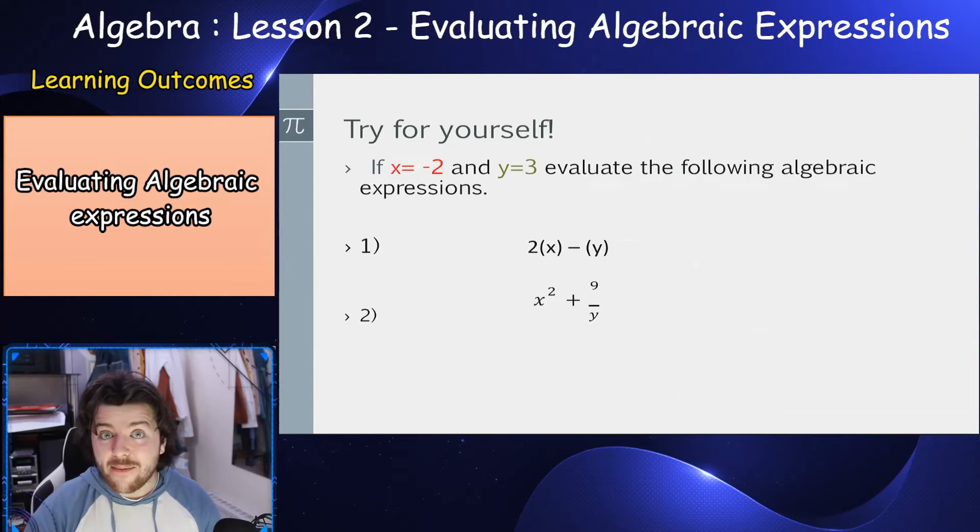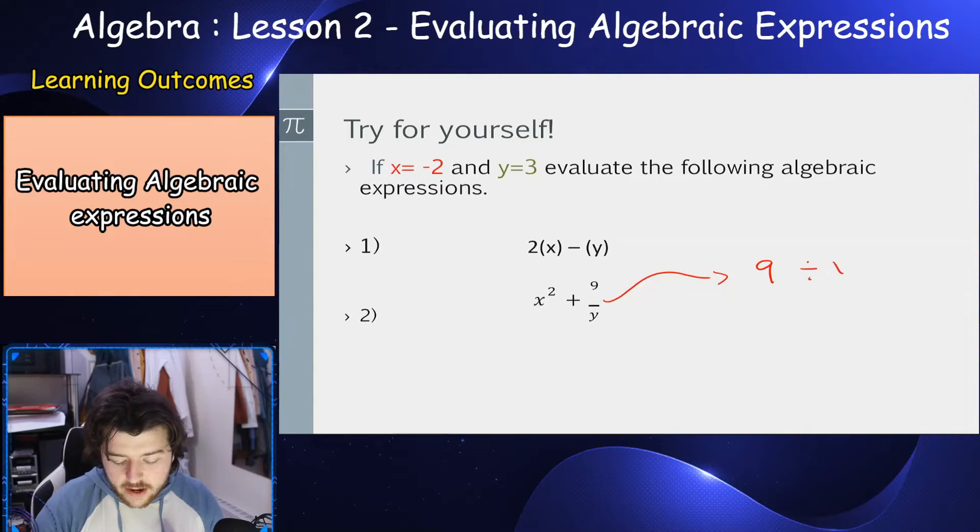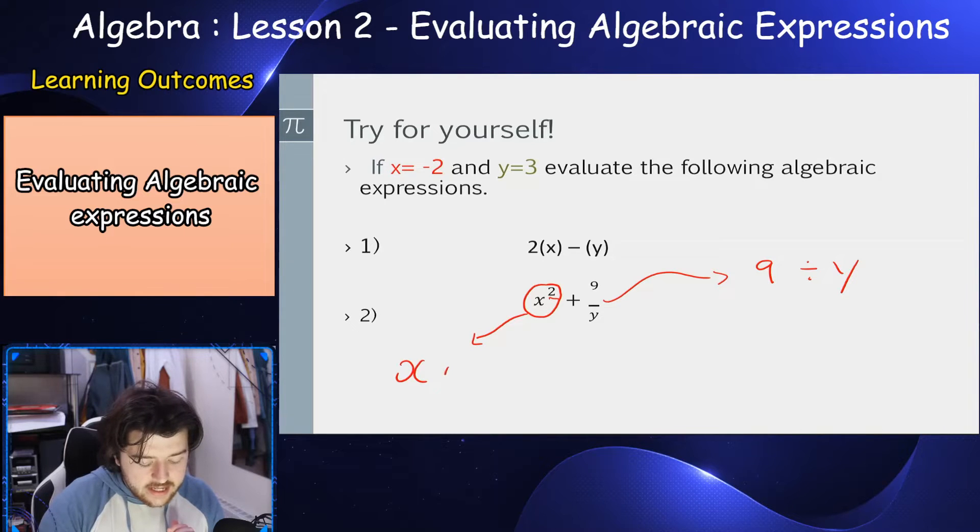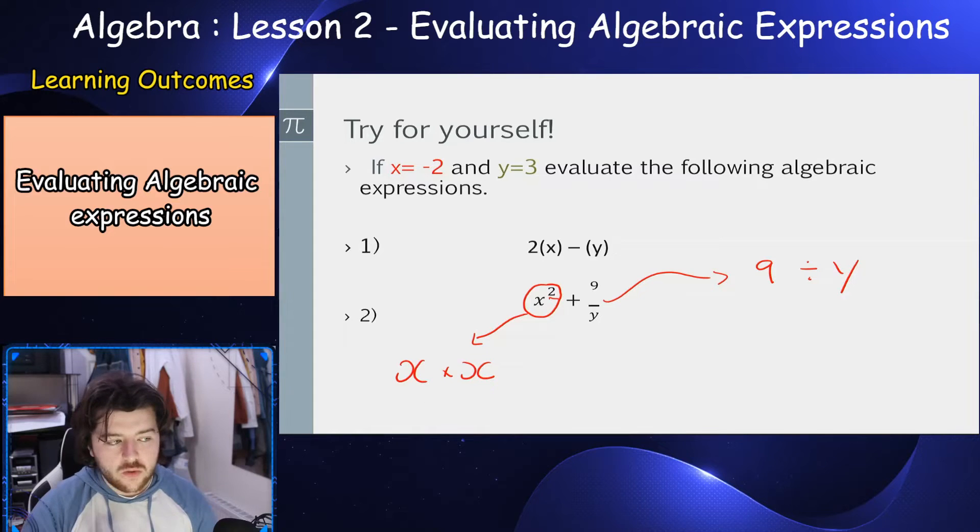Remember our fraction is the same as division, so this is the same as 9 divided by y. And also recall the squared notation, the little 2 here, that's the same as x multiplied by x. We're multiplying it by itself twice.